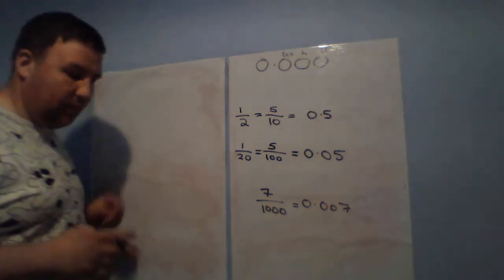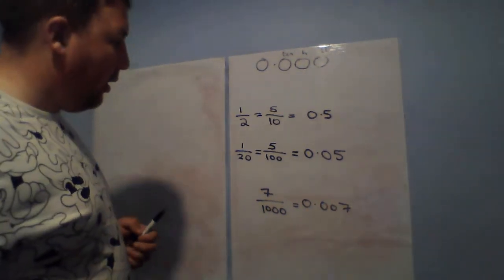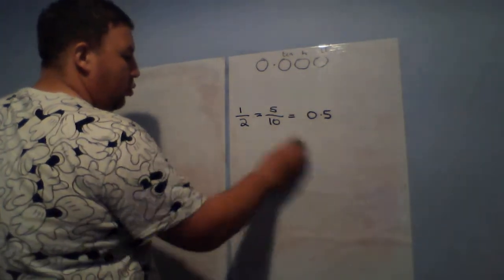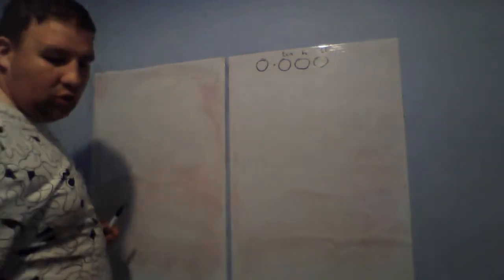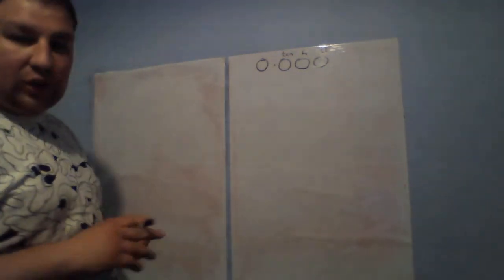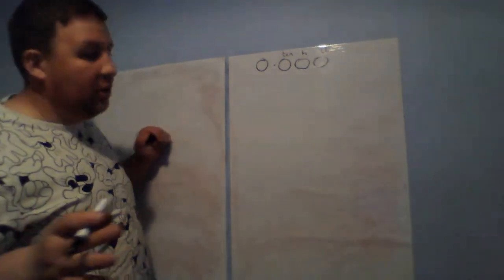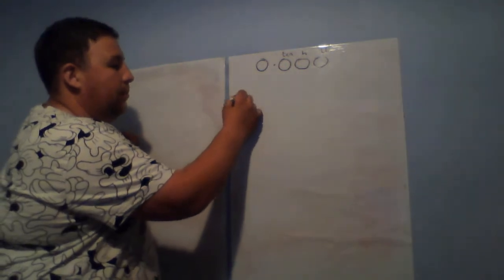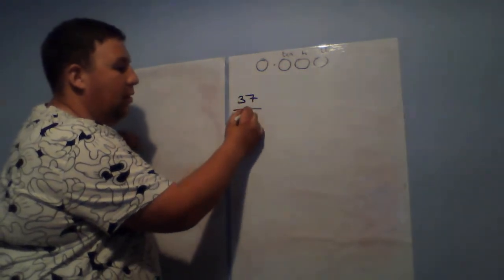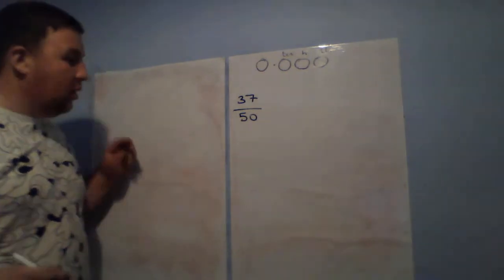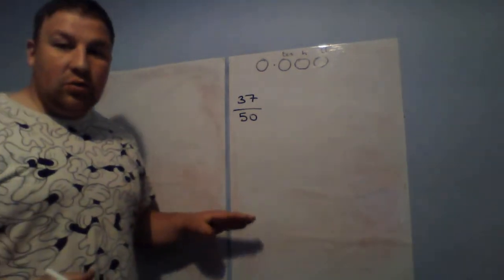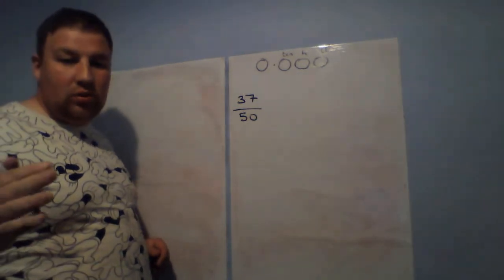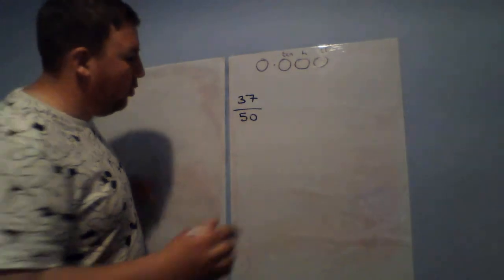Every time you have your fraction over 10 — because there's one zero — it goes one decimal place. If you have it over a hundred, there are two zeros, so two decimal places. If you had the number seven over a thousand, you would need three decimal places — so it would be 0.007. You have your three decimal places.